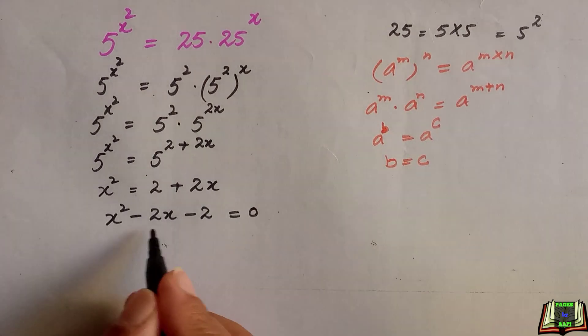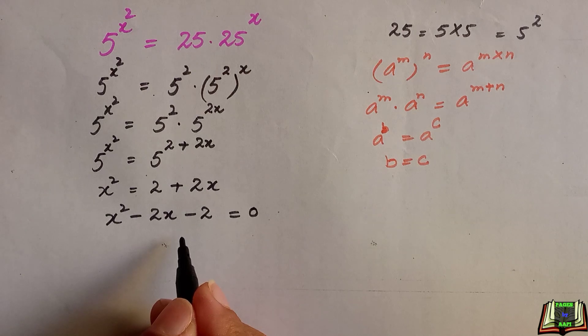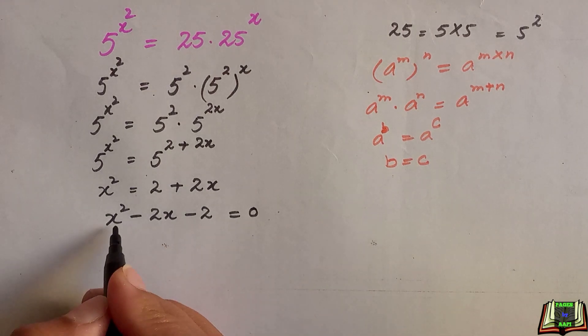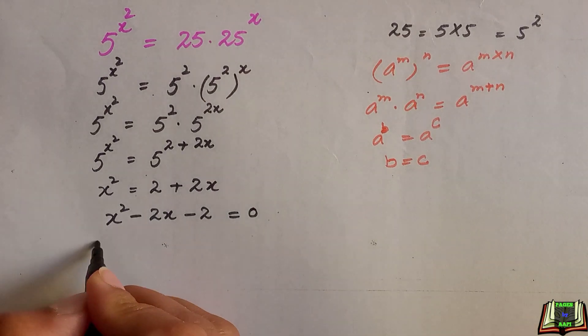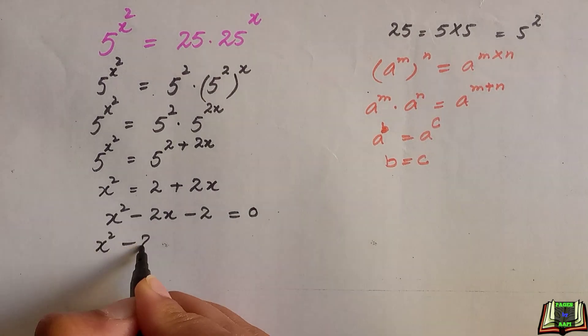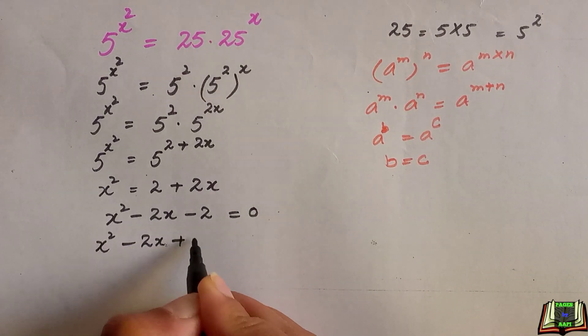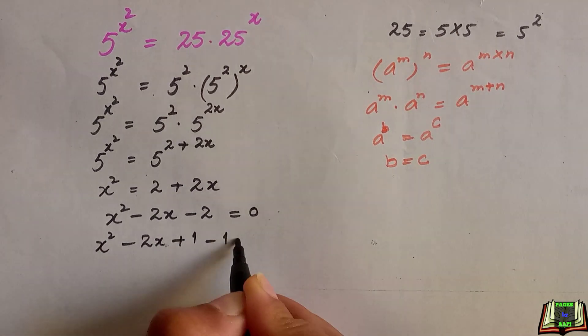Now it becomes a quadratic equation and the next step is to find the root of x. What we are going to do is add and subtract 1 in this equation to balance the equation, plus 1 minus 1.